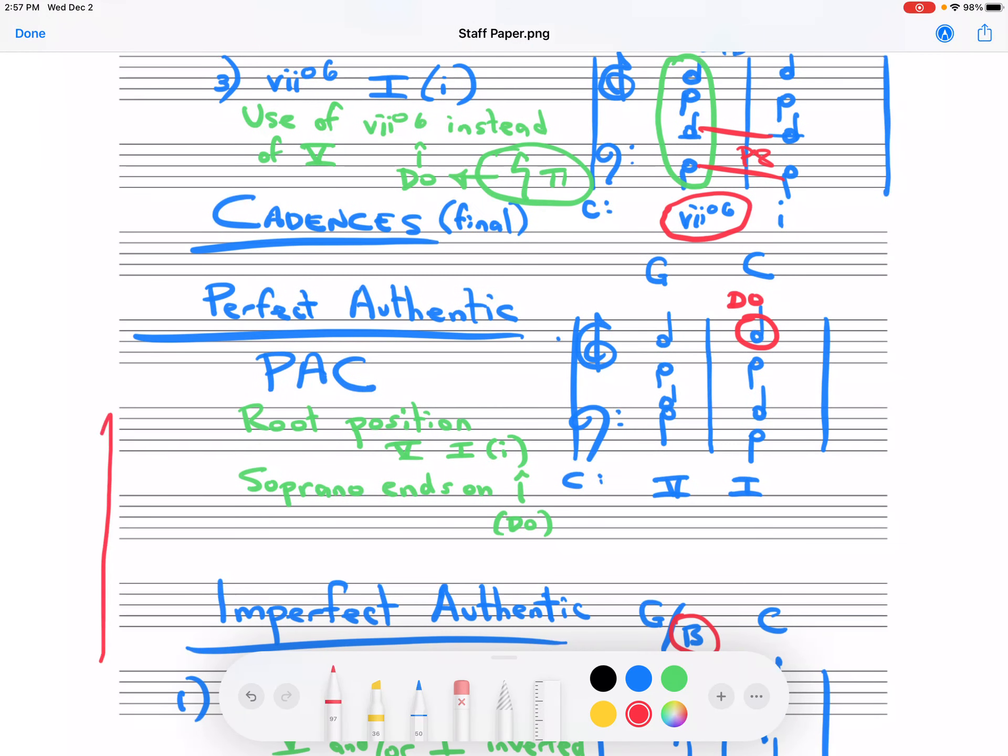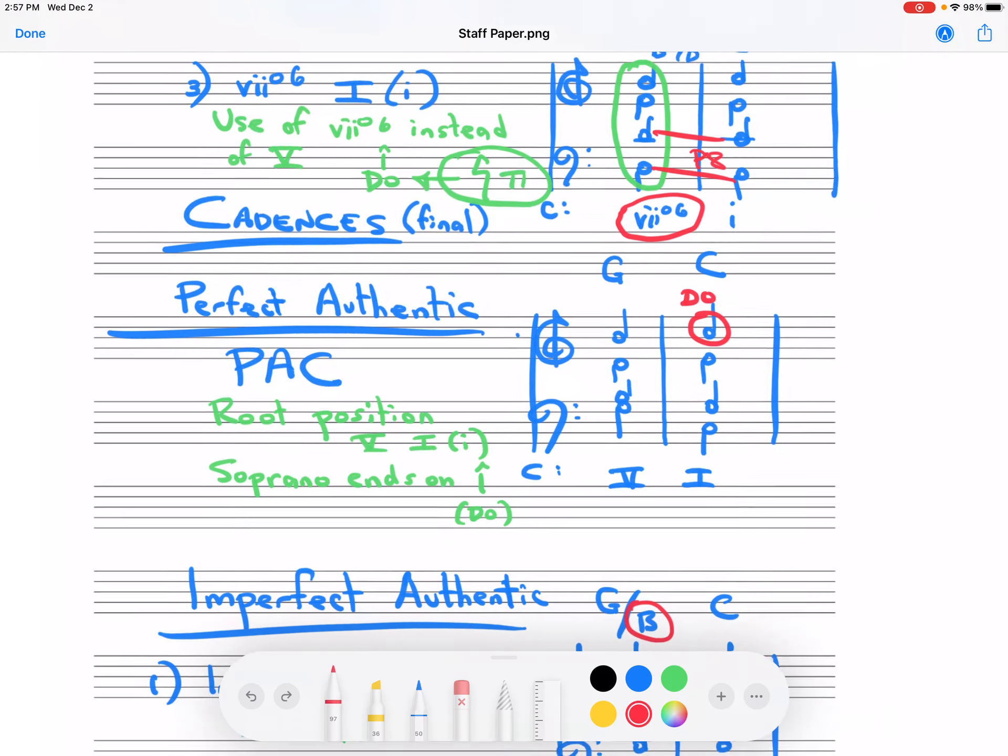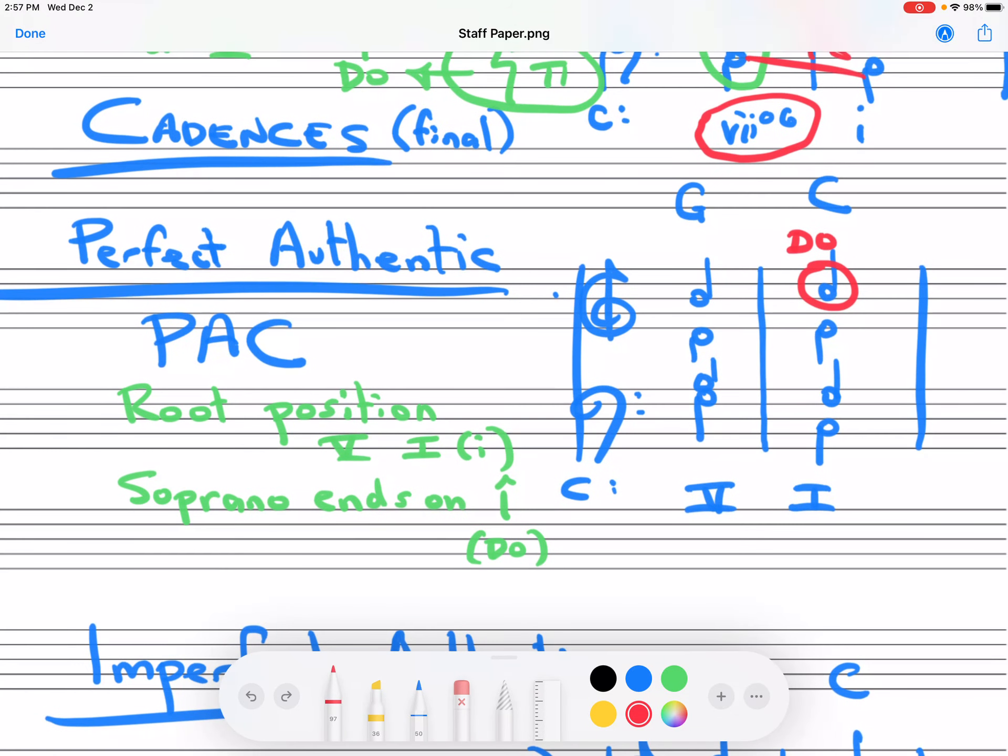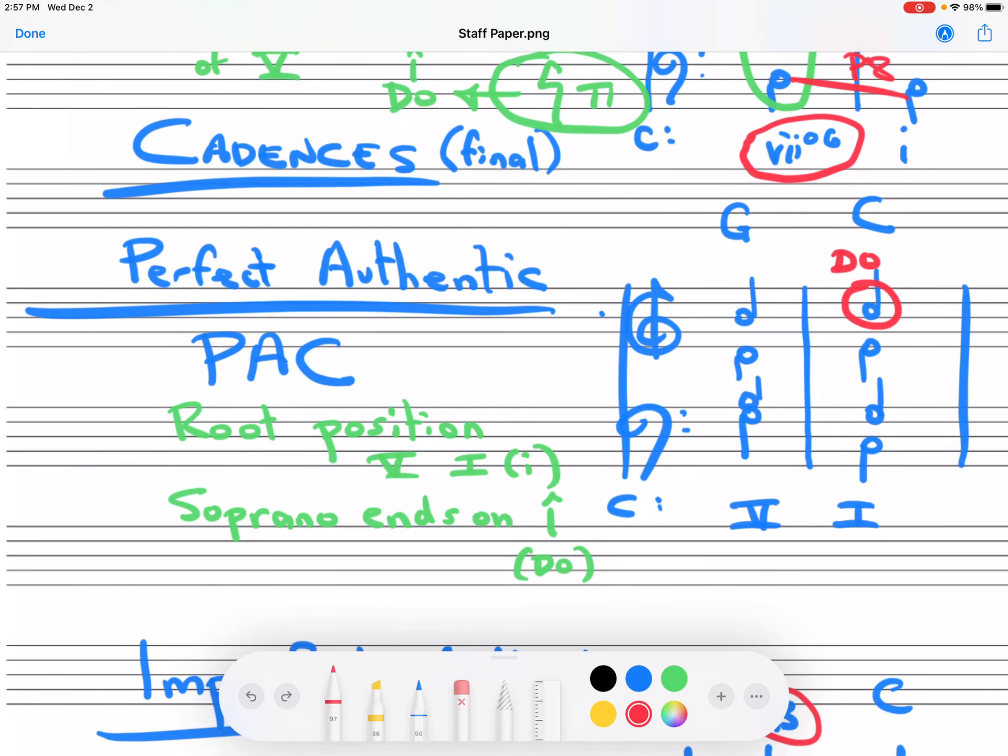These are all the kinds of cadences that you can use to end a phrase or a section. In the next video, I'm going to talk about two other types of cadences that are places to pause or end a phrase, but which require going on, which require moving on in the rest of the music. Thanks for watching.